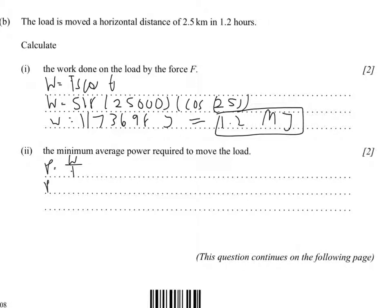We just calculated the work, so we're going to use the actual value. So it's 1173698 over time, and it gives in 1.2 hours, which is 1.2 times 60 minutes times 60 seconds. And this is going to give you a power of approximately 272 watts.